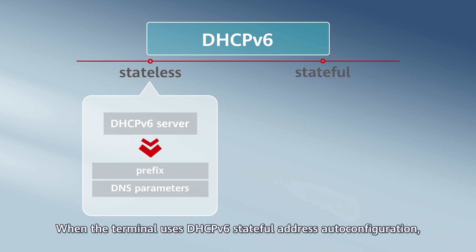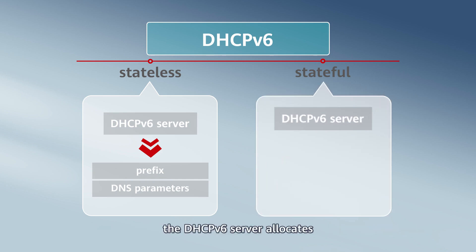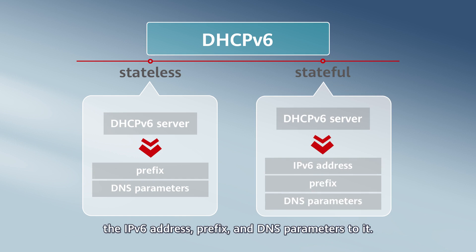When the terminal uses DHCPv6 stateful address autoconfiguration, the DHCPv6 server allocates the IPv6 address, prefix, and DNS parameters to it.